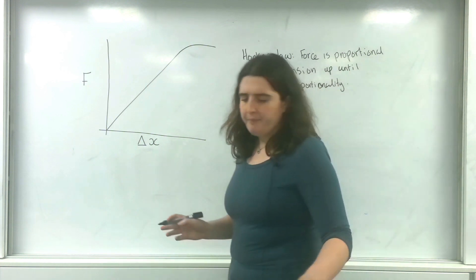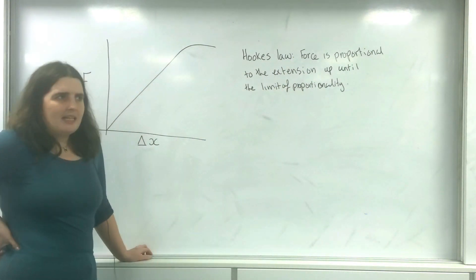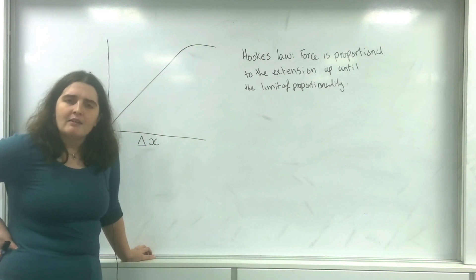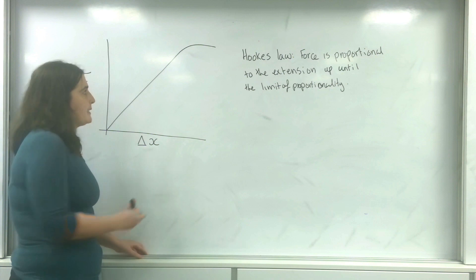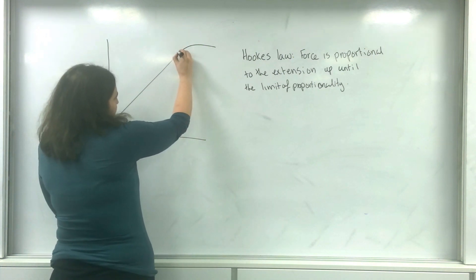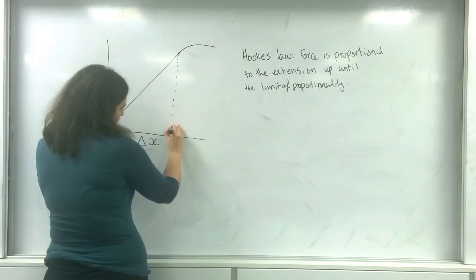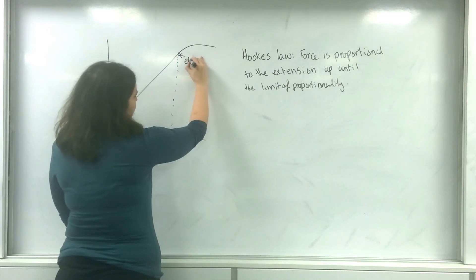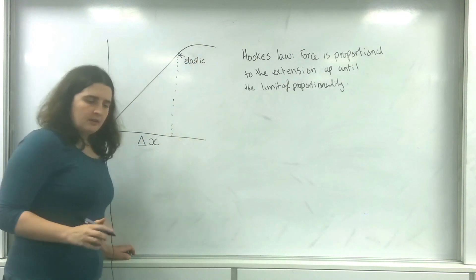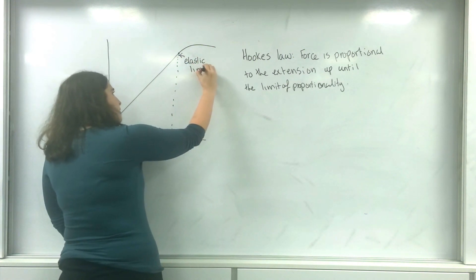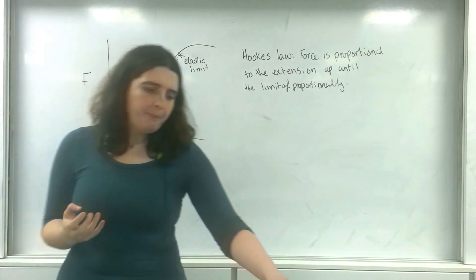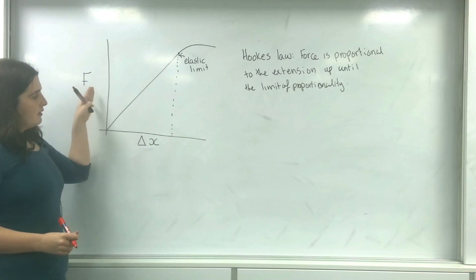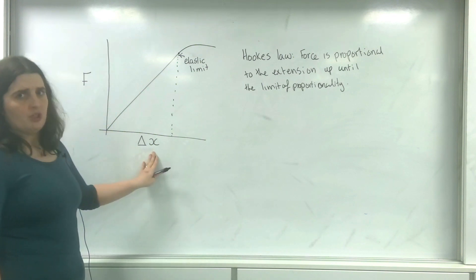Up until the limit of proportionality — and what I mean by that is up to the point where the relationship is still proportional, meaning a straight line — Hooke's Law is obeyed. This point here is the limit of proportionality, sometimes called the elastic limit. Up to that point, force F is directly proportional to the extension, delta X.